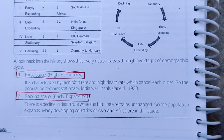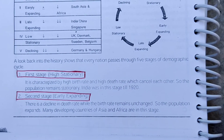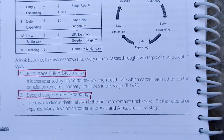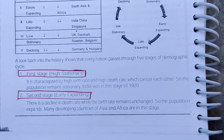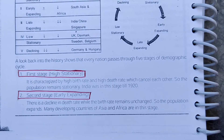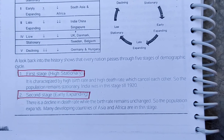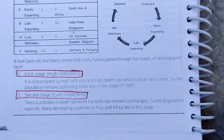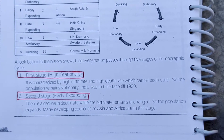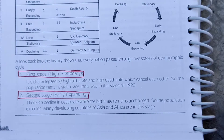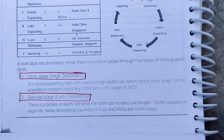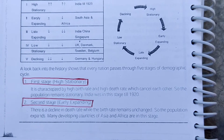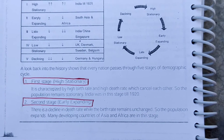The first stage is High Stationary. It is characterized by a high birth rate and a high death rate, which cancel each other out, so the population remains stationary. India was in this stage until 1920.